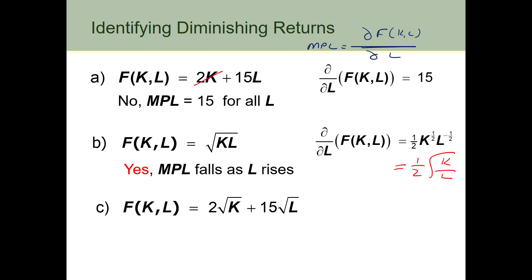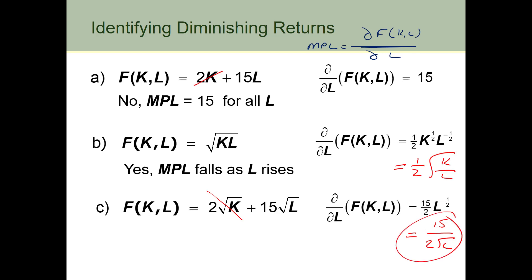For the third example, we're again differentiating with respect to L holding k constant. Since k is constant, the first derivative of that first term is zero. In this case we'll have 15 over 2 times the square root of L. Once again, as L increases this amount will get smaller, so the marginal product of labour falls as L increases and we have diminishing returns.